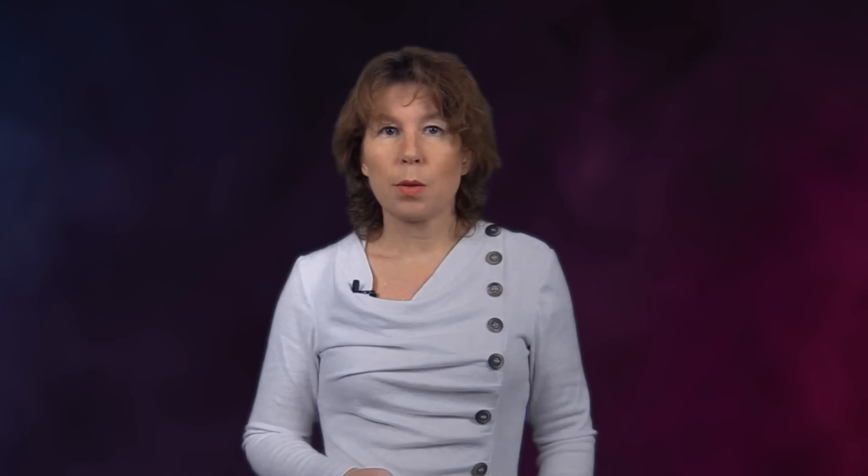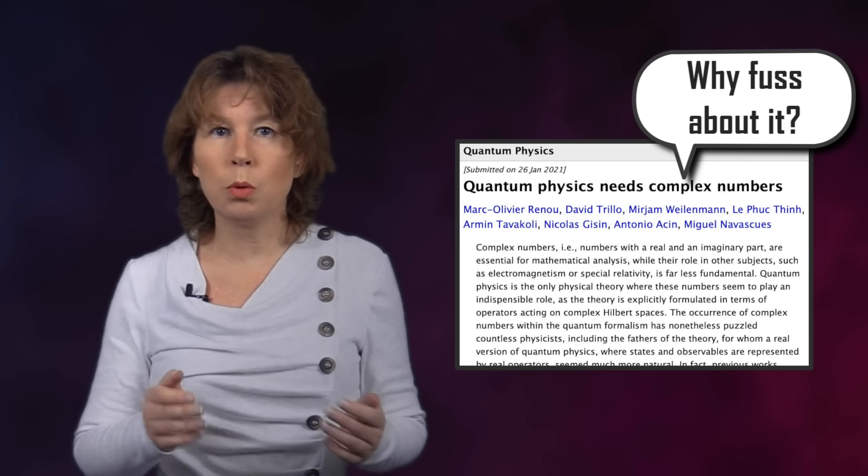The recent controversy broke out when a paper appeared on the preprint server with the title 'Quantum Physics Needs Complex Numbers.' The paper contains a proof for the claim in the title, in response to an earlier claim that one can do without the complex numbers. What happened next is that computer scientist Scott Aaronson wrote a blog post in which he called the paper striking. But the responses were not very enthusiastic — they ranged from 'why fuss about it' to 'bullshit' to 'it's missing the point.' We'll look at the paper in a moment, but first I will briefly summarize what we're even talking about so that no one's left behind.